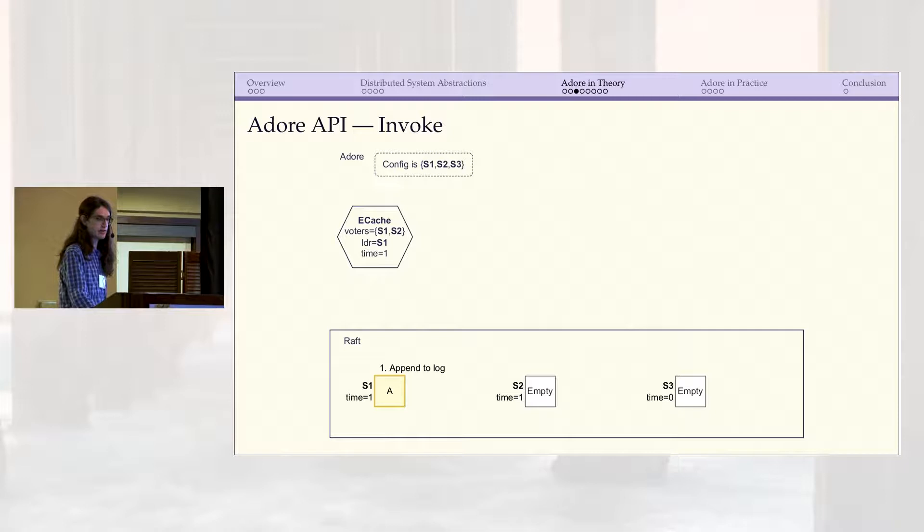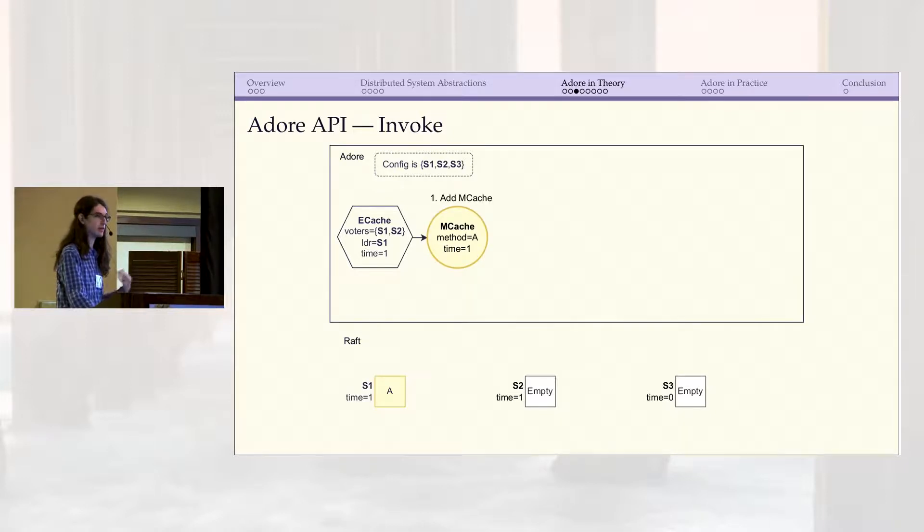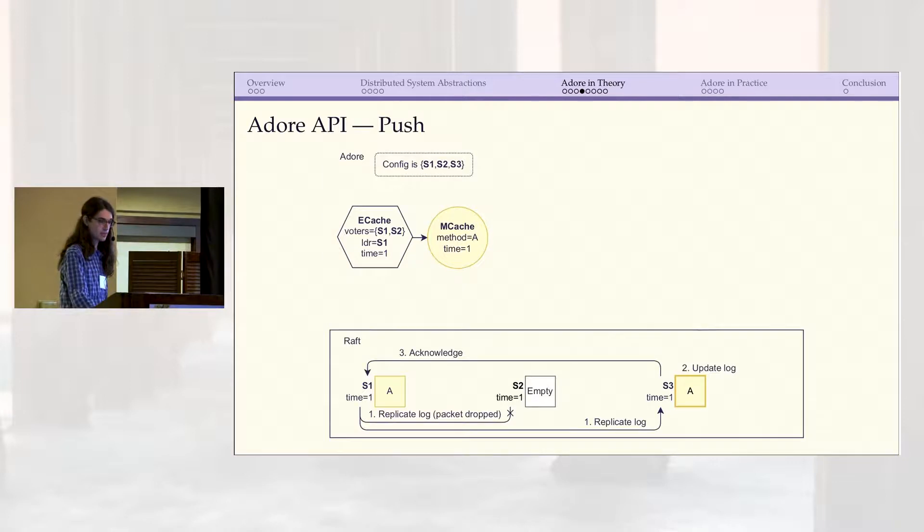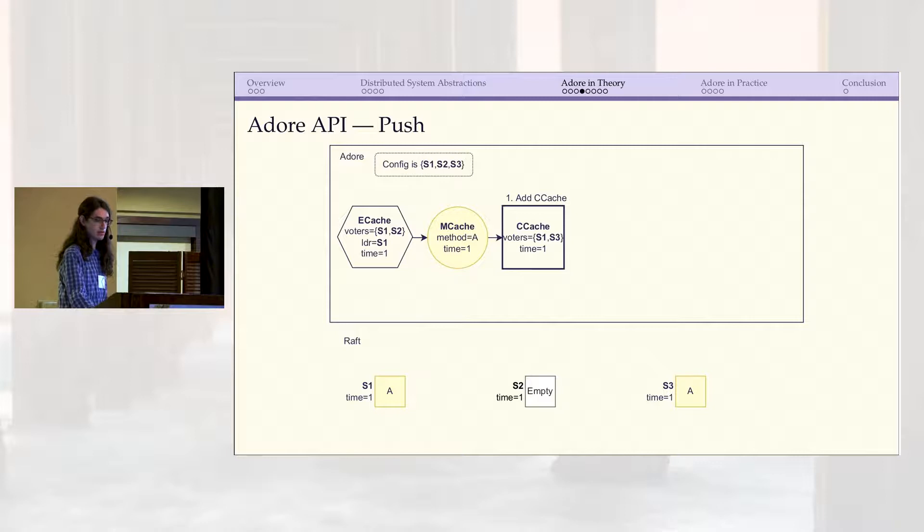Once elected, leaders can then append new methods to their logs. Likewise, in Adore, the leader can extend its current branch with a new M cache. Here, we're just maintaining this correspondence between the leader's log and its current branch. Then to commit this new method in Raft, the leader has to once again broadcast its log. The other servers perform some more local comparisons and may update their own logs. If a quorum of them do this, then the method is said to be committed. In Adore, this is done by the push operation, which again is just an atomic decision that either succeeds or fails. If it succeeds, it creates a C cache, and this is a checkpoint that now all of the M caches along this branch are committed and agreed upon by at least a quorum of voters.